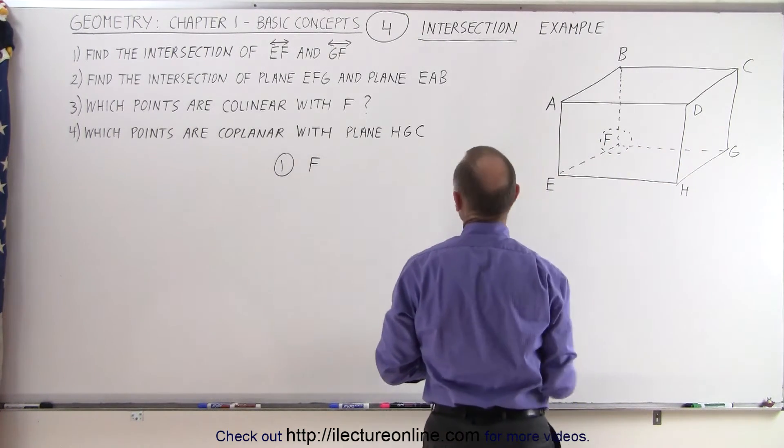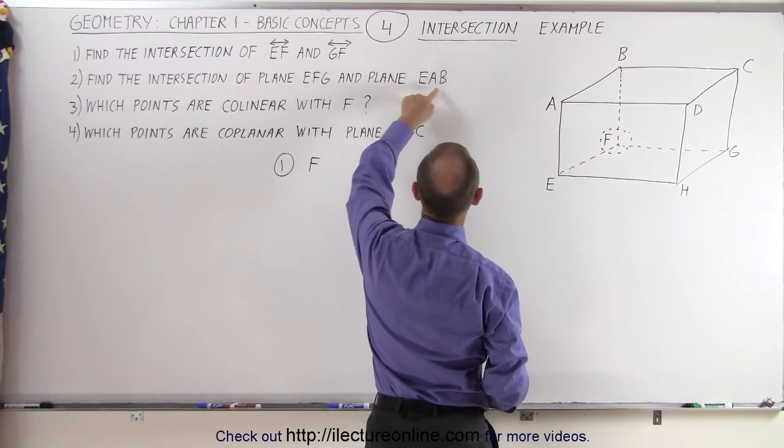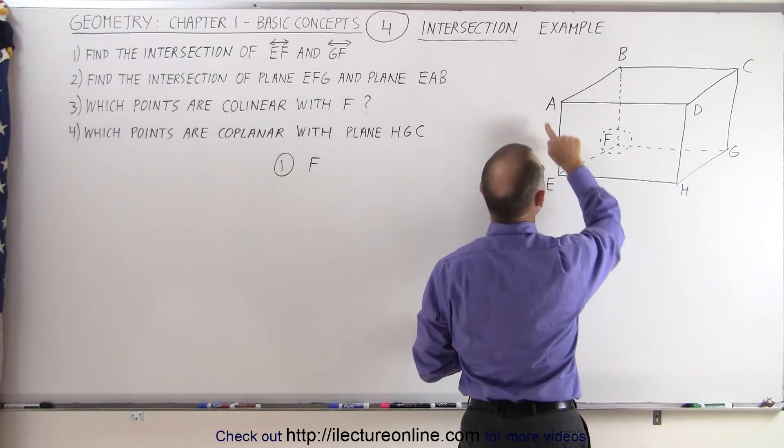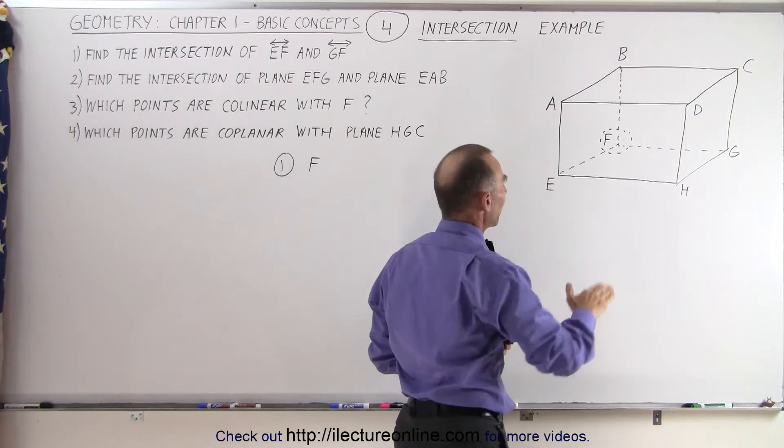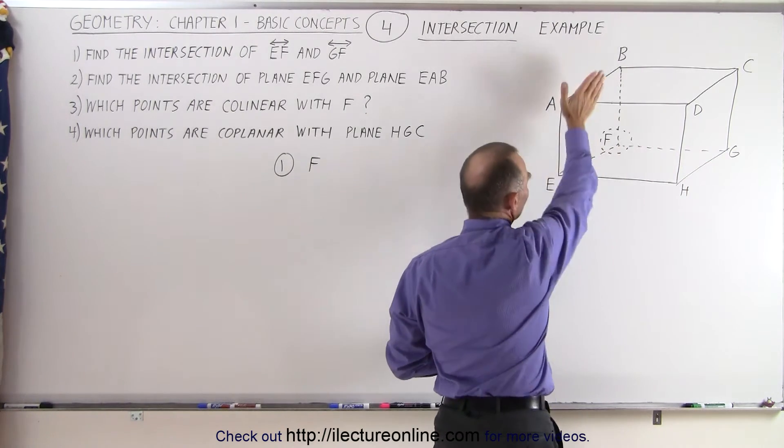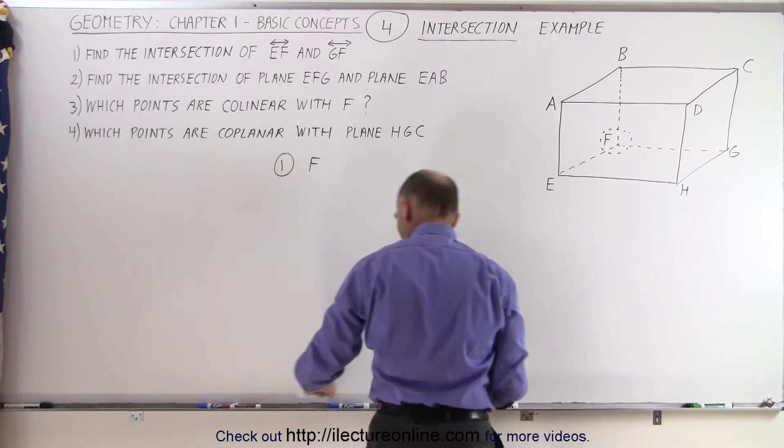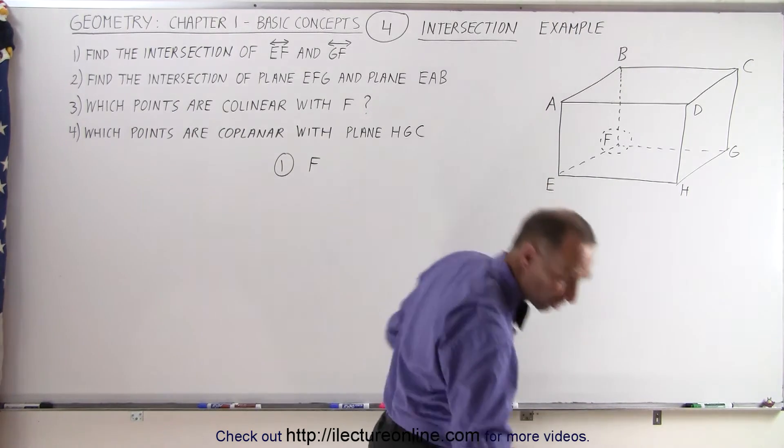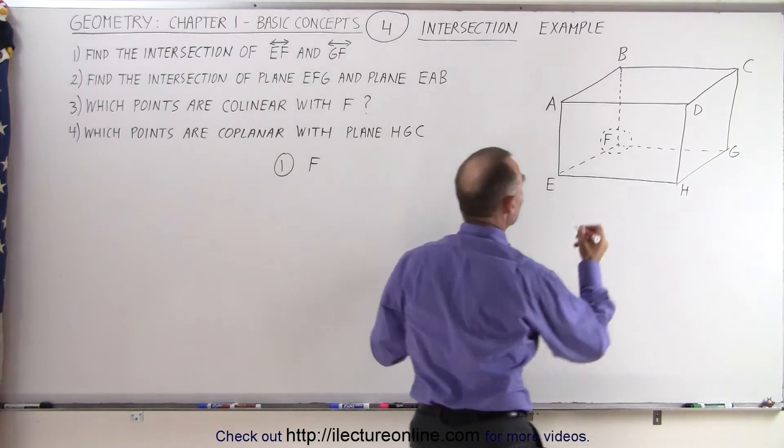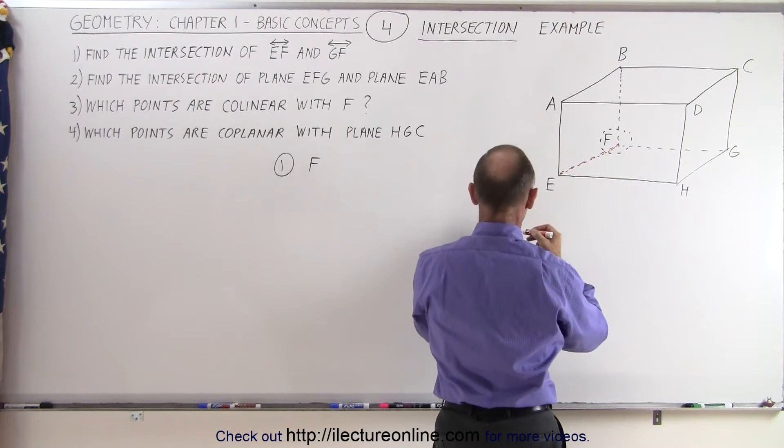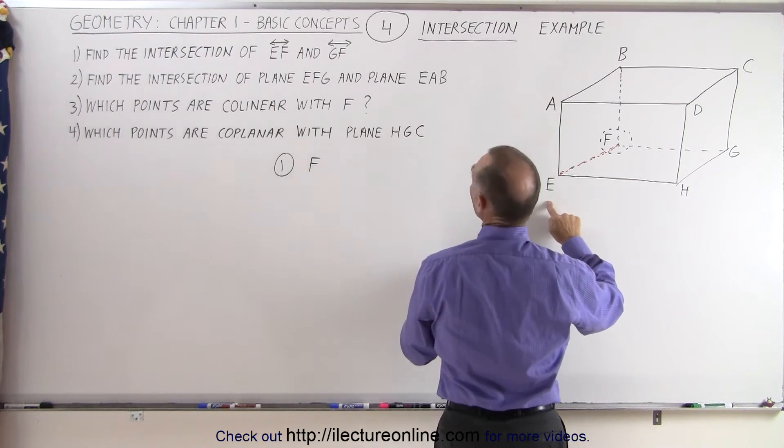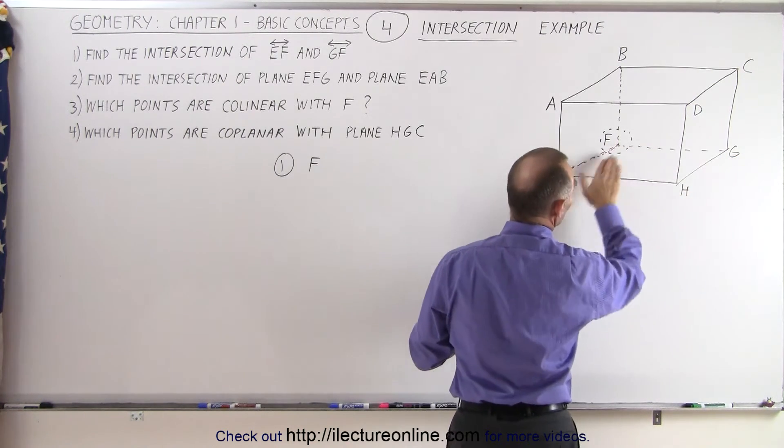This is the side at the bottom of the box. We have another plane, EAB, which defines the left side of the box. So we have the bottom of the box, we have the left side of the box, and where the two meet, where the two intersect, would be right here. This is where the two intersect. So we have EFG, so that's this plane down here.